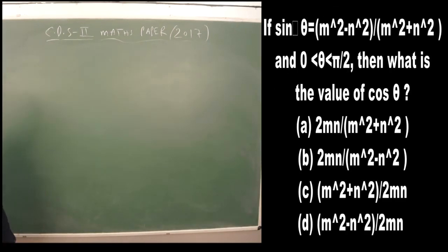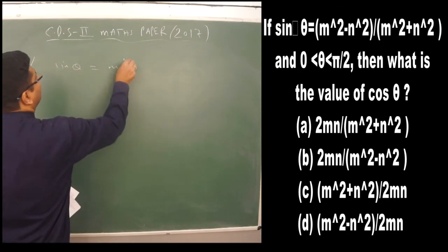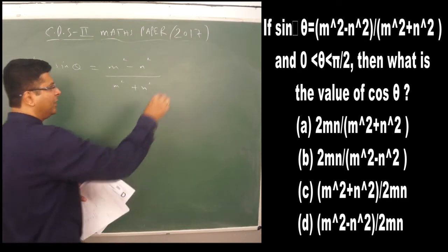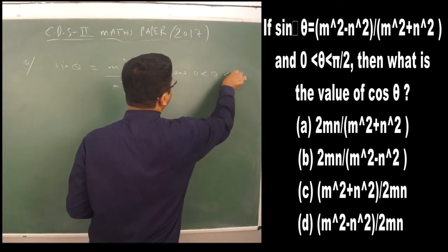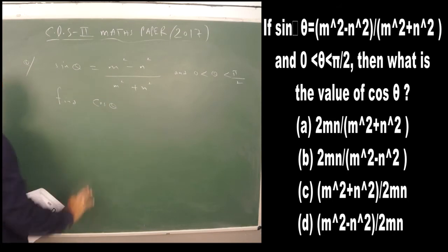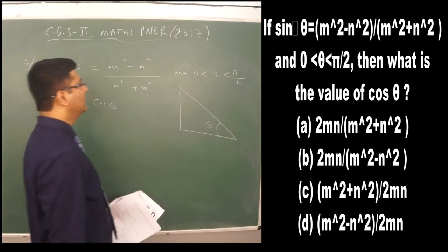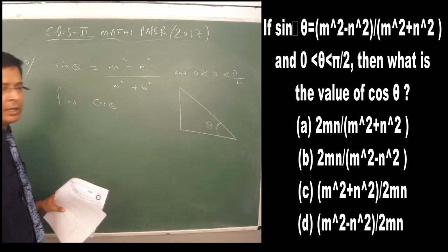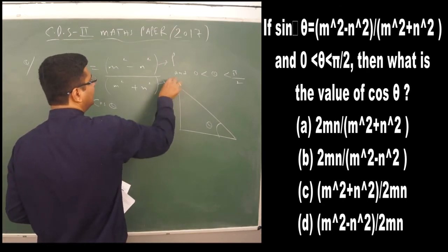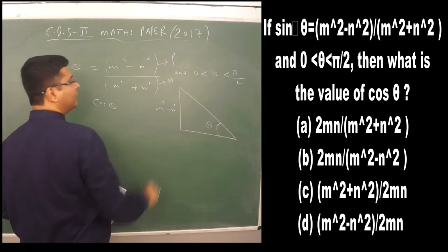Now a question from trigonometry. The value of sin θ is given as (m² - n²)/(m² + n²), with θ in the first quadrant (0 to π/2). We need to find cos θ. Draw a right triangle and mark angle θ. Since sin θ = perpendicular/hypotenuse, the perpendicular is m² - n² and the hypotenuse is m² + n².